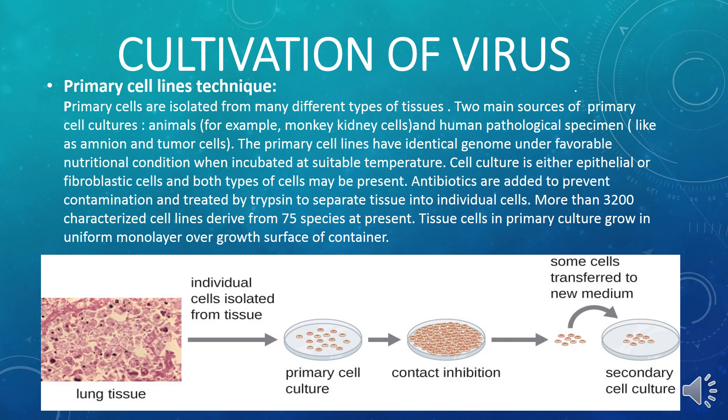After viral cultivation — when the virus has been cultivated and the medium begins to age — some cells are inoculated and transferred to another petri plate. These cells will now be called secondary cells after the transmission, and the medium will now be called secondary cell culture.